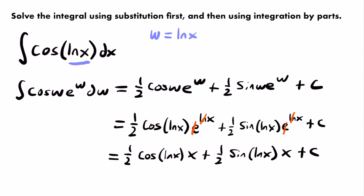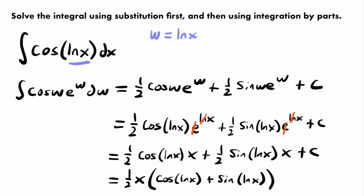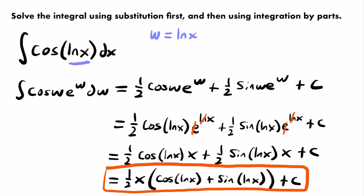We can simplify further by factoring out the common factor of one-half x from both terms. Our final solution is one-half times x times the quantity cosine of the natural log of x plus sine of the natural log of x, plus C. That is the solution to the original integral of cosine of the natural log of x dx.